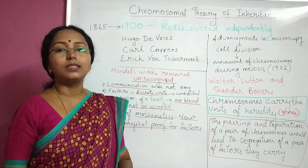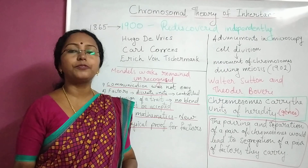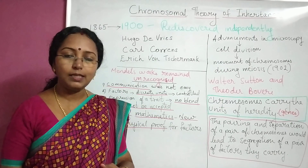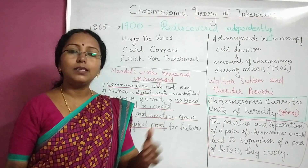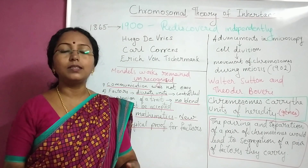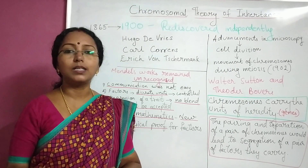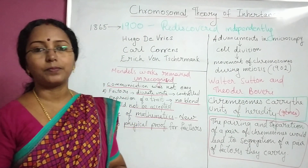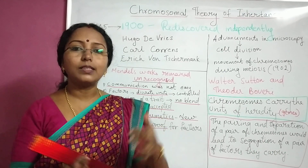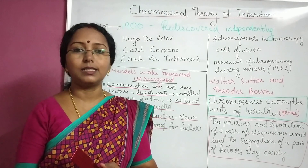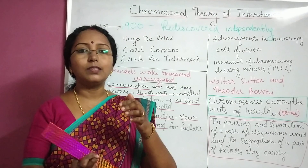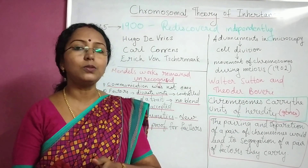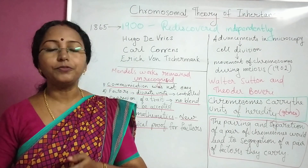So far in this chapter on principles of inheritance and variation, we have been learning about Mendelian genetics and Mendelian principles of inheritance. Today we have come with a new concept of chromosomal theory of inheritance, which is strictly related to Mendelian concepts. Let us have a recap of those Mendelian concepts and how they relate to chromosomal theory of inheritance.